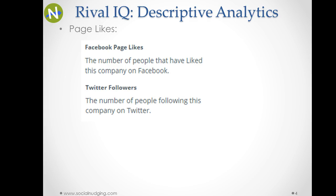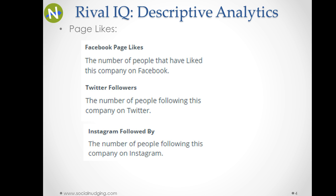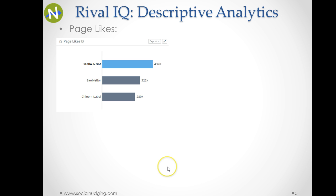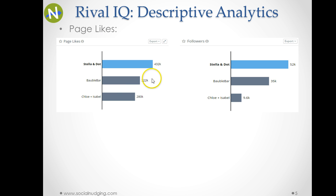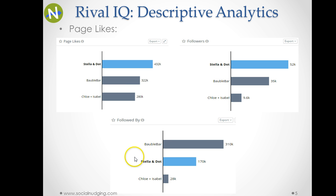Similarly, they have defined Twitter followers as the number of people following this company on Twitter, and for Instagram, the number of people following these companies on Instagram. The basic definition is the same — the only difference is Facebook uses 'liked by', Twitter uses 'followed by', and Instagram uses 'followed by'. If you look at their graphs for page likes, Twitter followers, and Instagram followed by, the graphs are almost the same.